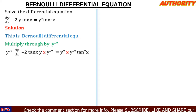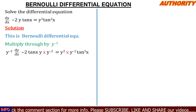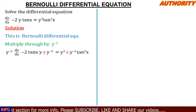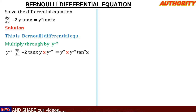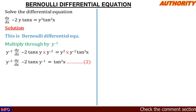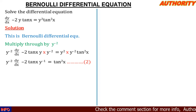Multiplying through by y⁻², we get: y⁻²·(dy/dx) minus 2·tan(x)·y⁻¹ equals tan²(x). Here, y·y⁻² gives y⁻¹ and y²·y⁻² gives y⁰ = 1, using the law of indices — same base, we add powers: 1 minus 2 equals minus 1.